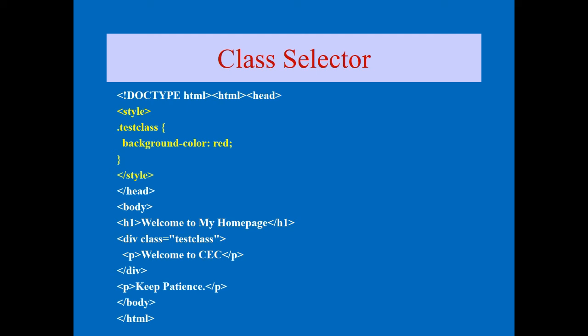Here is an example of class selectors using the document type of CSS. Inside the style tag, you write the class selector — starting with dot symbol then the class name. Here the class name is 'test class'. Inside the curly brackets I added one property: background-color: red; then a semicolon and close the curly bracket.